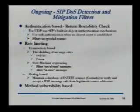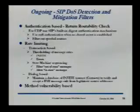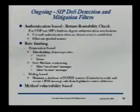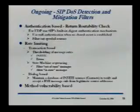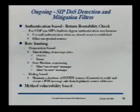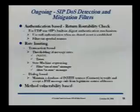Primarily, we are looking at return routability checks to prevent spoofing. Using the built-in SIP digest mechanism, SIP has the ability to do digest authentication — even if you don't have credentials, a kind of null authentication — which gives you, even for UDP, a return routability check. And we have a variety of rate-limiting mechanisms which allow you to rate-limit based on transactions, state machines, and dialogues.